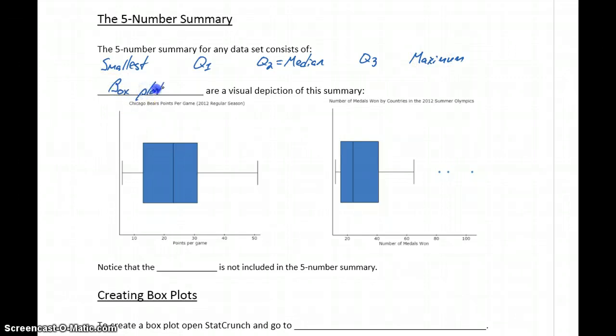So a box plot is just going to be a visual depiction of that five-number summary. For instance, in this first box plot on the left, we're graphing data from the Chicago Bears points per game for the 2012 regular season.